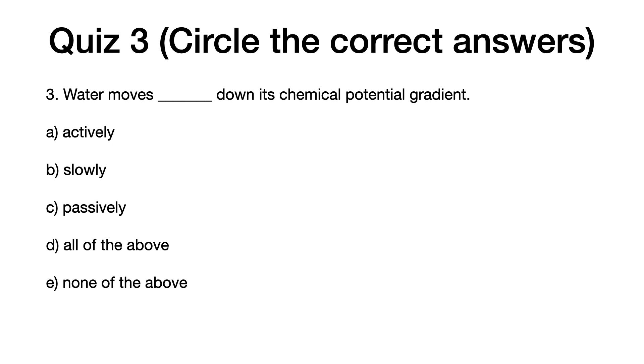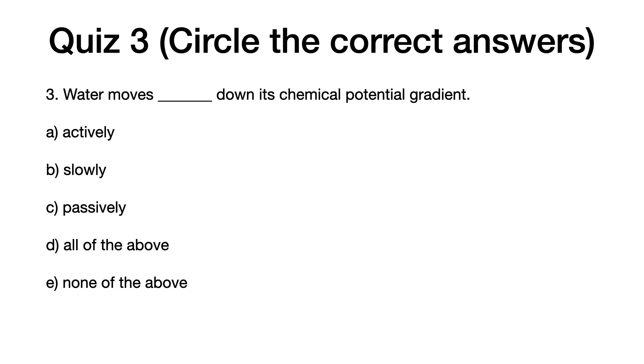Three, water moves blank down its chemical potential gradient. A, actively. B, slowly. C, passively. D, all of the above. E, none of the above.